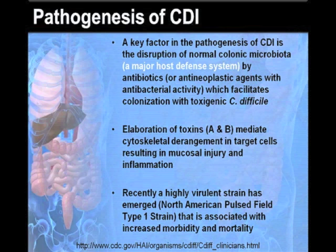Elaboration of toxins A and B mediates cytoskeletal derangement in target cells, resulting in mucosal injury and inflammation, and hence the symptomatology of CDI. More recently, a highly virulent strain has emerged, known as the North American pulsed field type 1 strain. This strain is associated with increased morbidity and mortality.